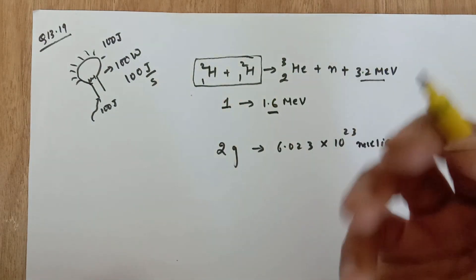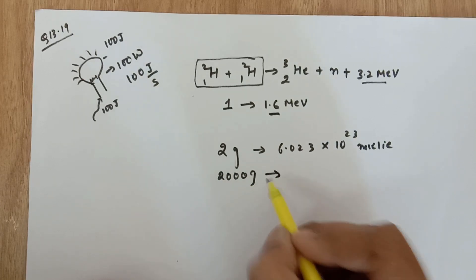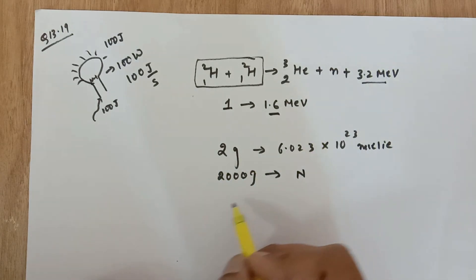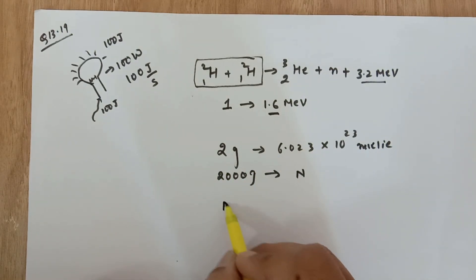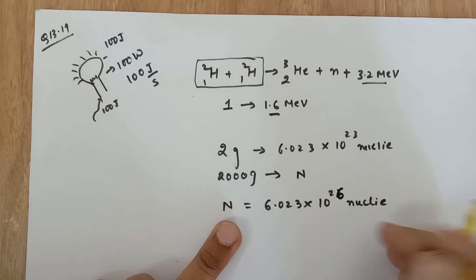We have 2 kilos of deuterium, so basically we have 2000 grams. It will have how many number of nuclei? Suppose N. Now you multiply this and you will get your answer as N equals 6.023×10^23 times 2000 divided by 2. So this will be simply 10^26 nuclei.